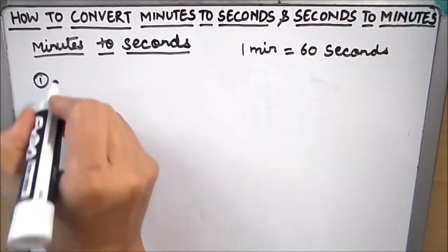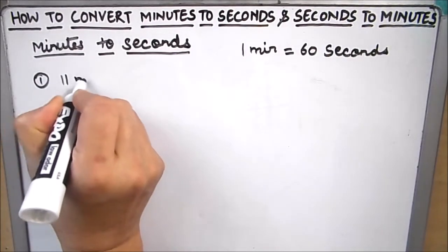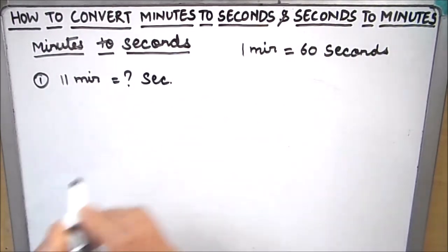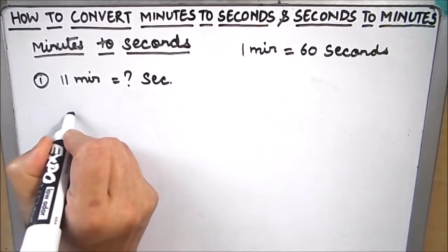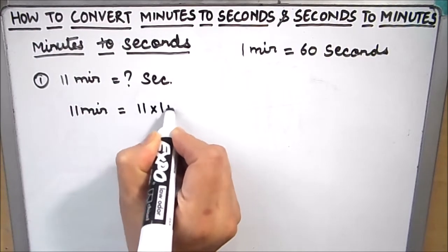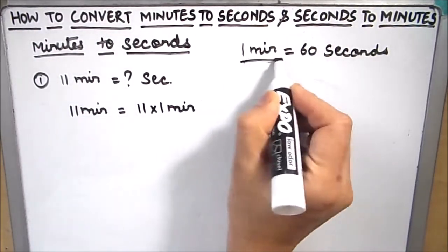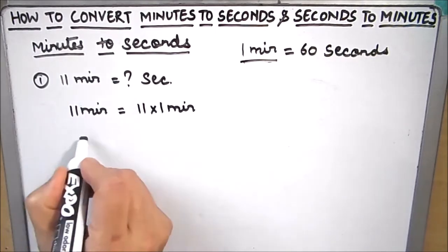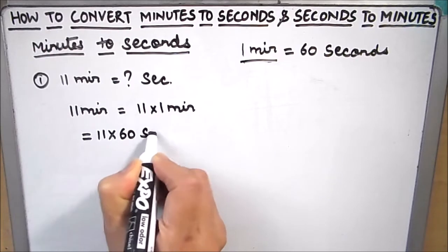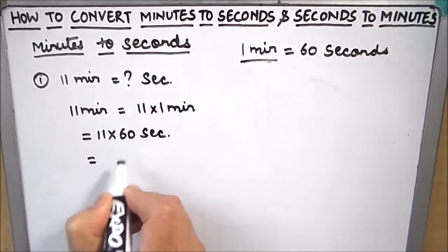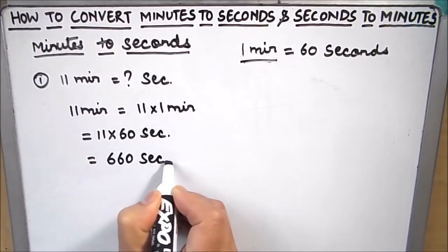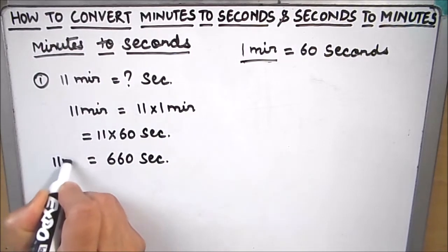Now suppose we have an example here to convert 11 minutes to seconds. This is going to be very easy. 11 minutes can be written as 11 times 1 minute, and in place of 1 minute we are going to write 60 seconds. So this will become 11 times 60 seconds, and our answer will be 660 seconds. So 11 minutes will be 660 seconds.